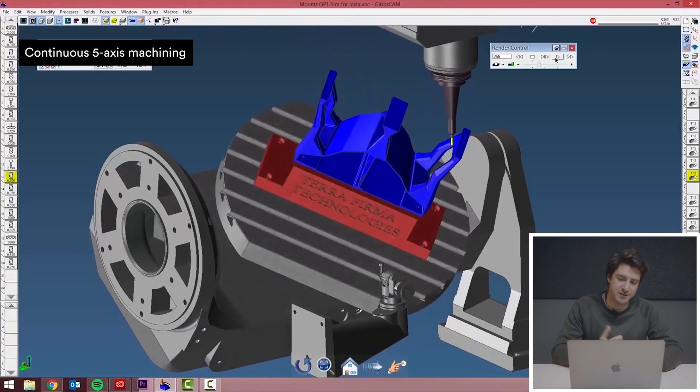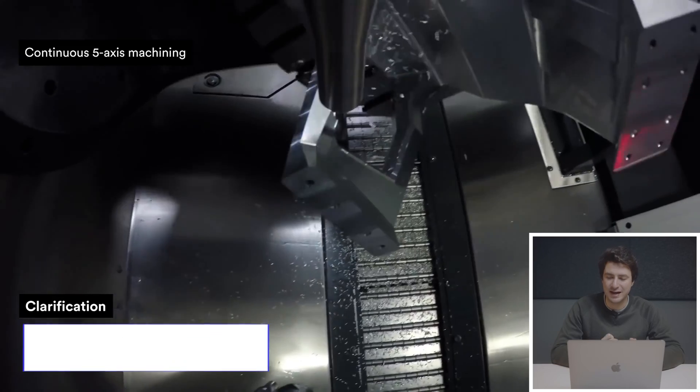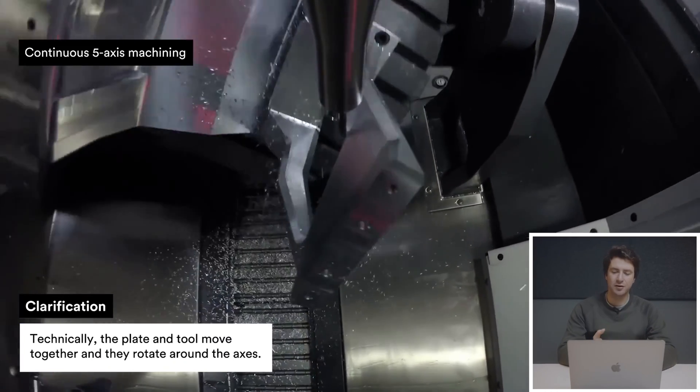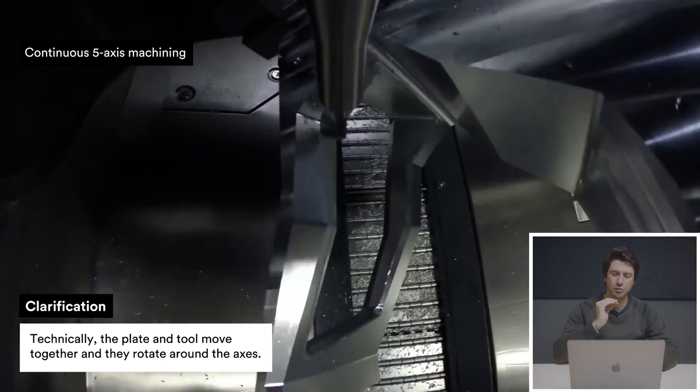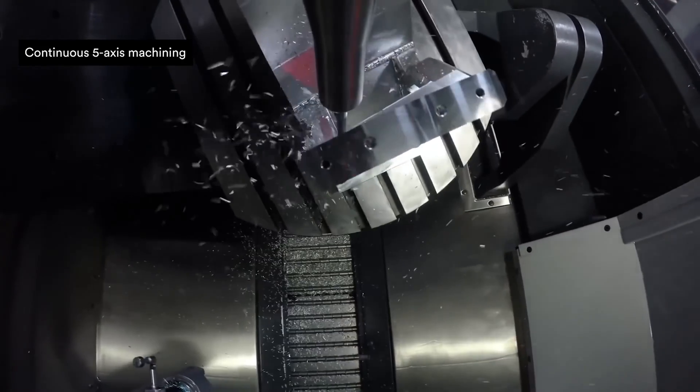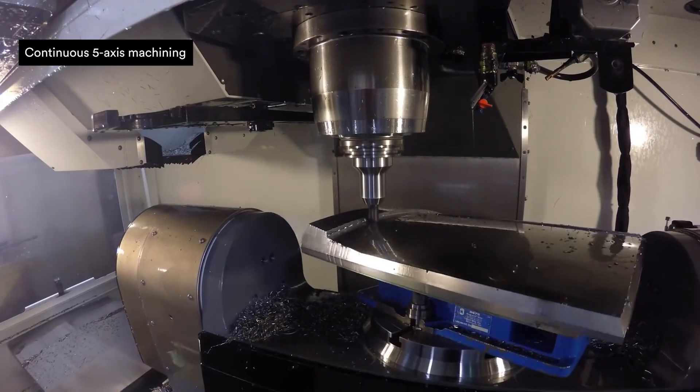It starts with the CAM software, like every type of CNC machining, and that is then translated into real life. You can see how all the axes and the tool are moving together. It's really cool to look at. Let's look at the whole section again. Just notice how both the tool and the plate are moving simultaneously, and we can see that in another example here as well.